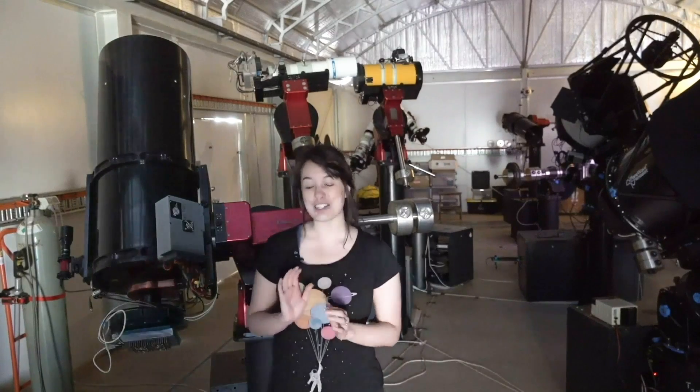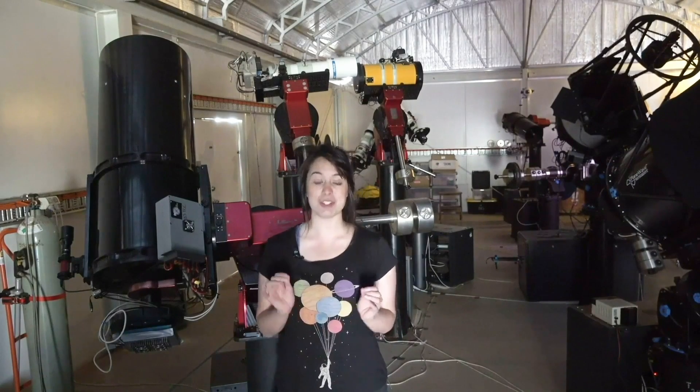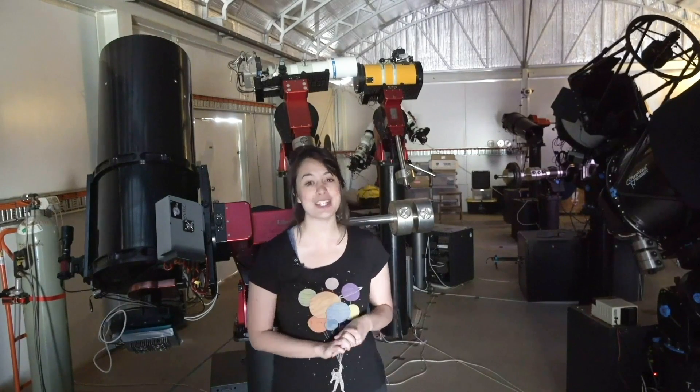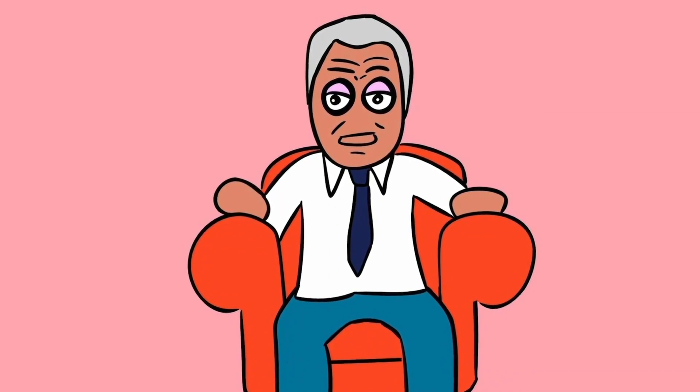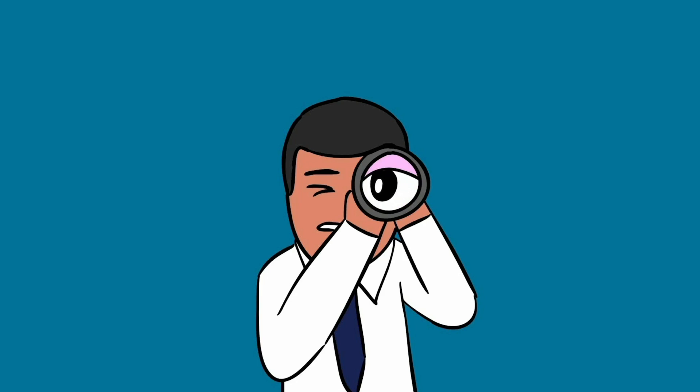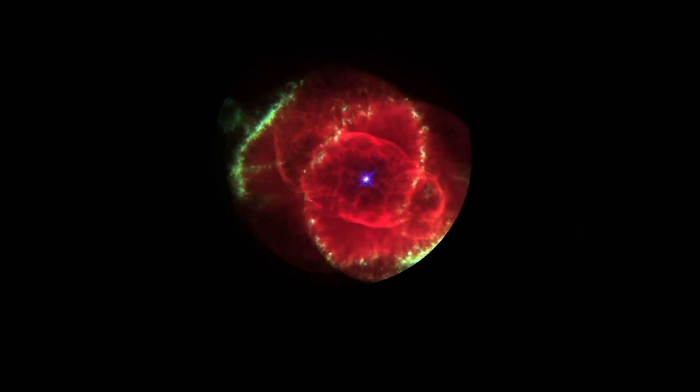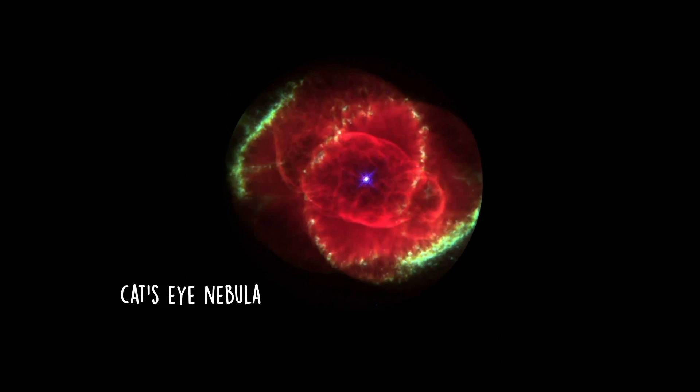It all started in 1864 when an English astronomer named Sir William Huggins looked through a telescope very similar to the one we have here. He described the night like this: I directed the telescope for the first time to a planetary nebula in Draco.